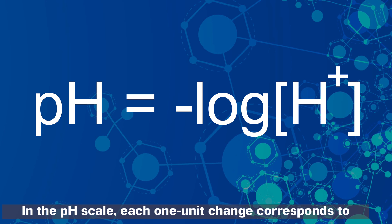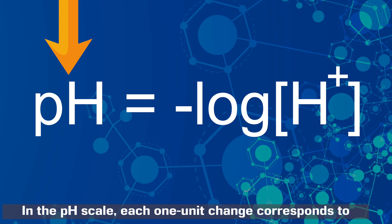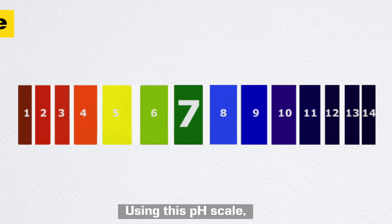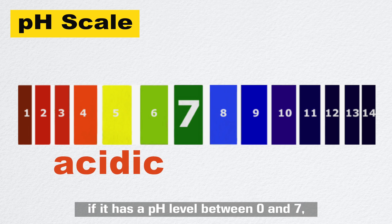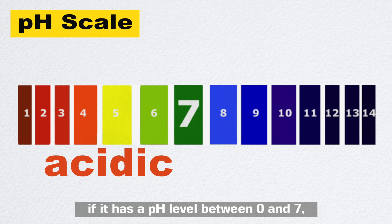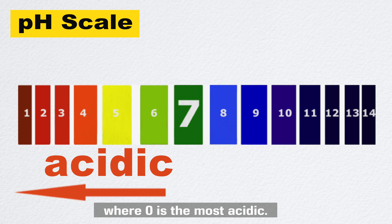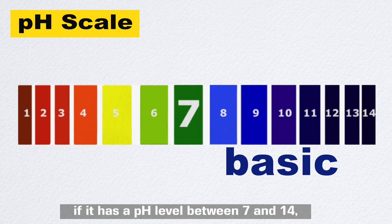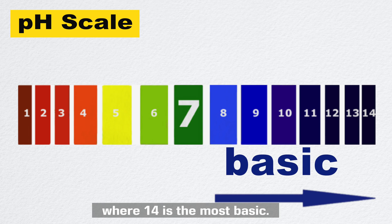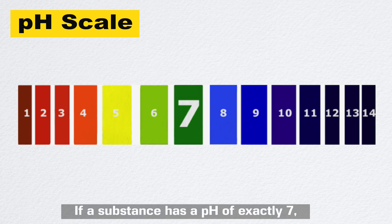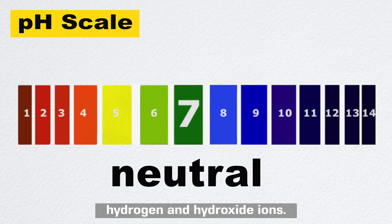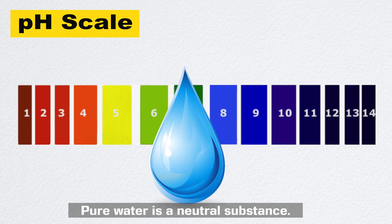On the pH scale, each one-unit change corresponds to a tenfold change in hydrogen ion concentration. A substance is acidic if it has a pH level between 0 and 7, where 0 is the most acidic. A substance is basic if it has a pH level between 7 and 14, where 14 is the most basic. If a substance has a pH of exactly 7, then it's neutral, meaning it has equal amounts of hydrogen and hydroxide ions.